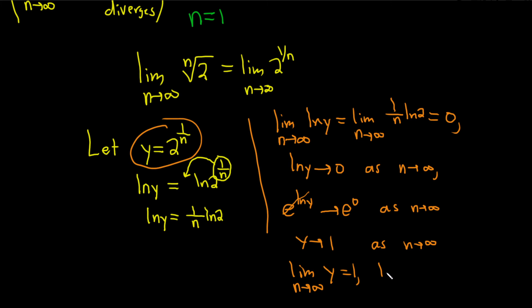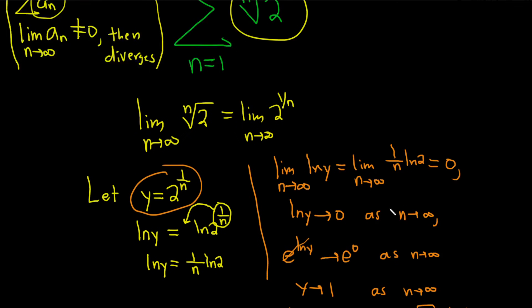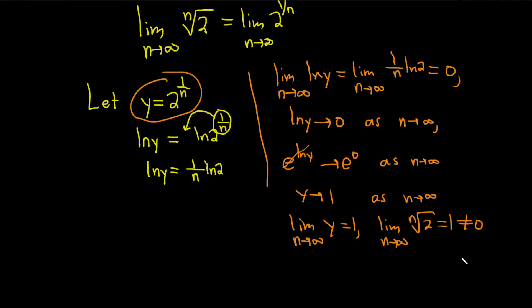In other words, the limit as n approaches infinity of the nth root of 2 is equal to 1. And that is not equal to 0, so now we can invoke the power of the nth term test. So our series diverges by the nth term test.